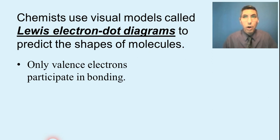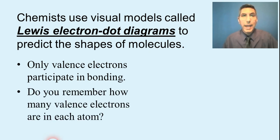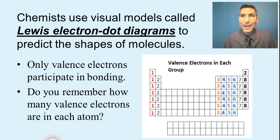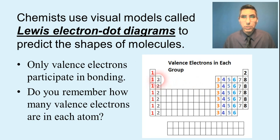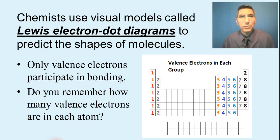Hopefully you've already learned about valence electrons and know how many each element has. In case you've forgotten, here's a visual aid: elements in group 1 have one valence electron, group 2 have two, group 3 have three, and it goes like that across the table. The noble gases mostly have eight. Generally speaking, we work with non-metals — halogens have seven, group 16 have six, group 15 have five, group 14 have four, and hydrogen has one. Keep that in mind as we go through our structures today.